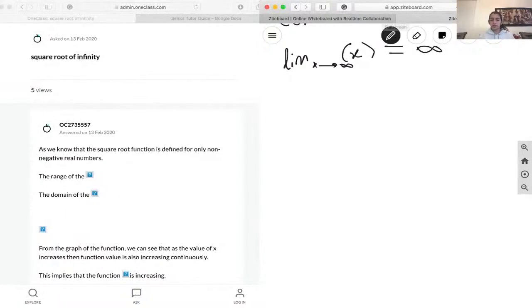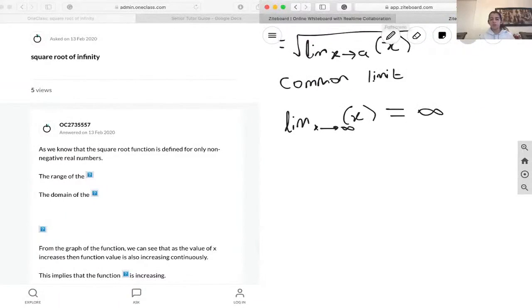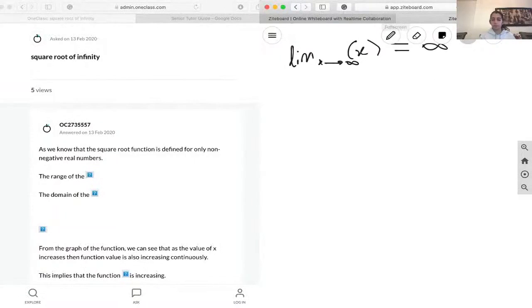Okay, then we can continue on saying that, basically, based on this equation over here. So we said that the square root of the limit of x as it approaches a of x, that's our function. And over here, the limit of x as it approaches infinity of x is equal to infinity. So basically, we're going to place this over here, and that equals to the square root of infinity.